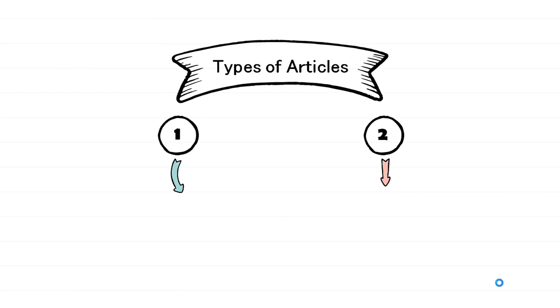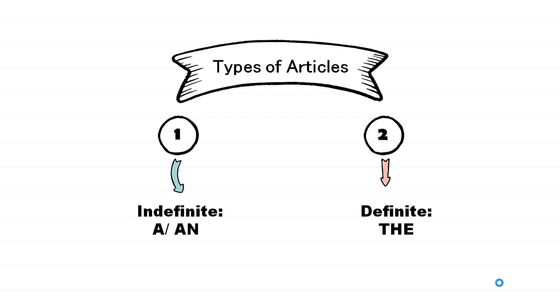When we talk about types of articles, we have two types: indefinite and definite. In indefinite articles, we talk about A and AN, whereas the definite article refers to The.